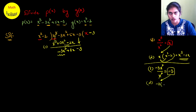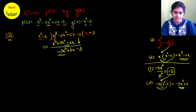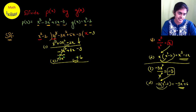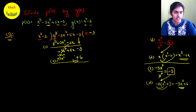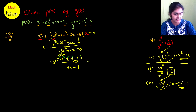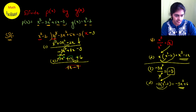Now step two again: multiply -3 by the divisor x² - 2. That gives -3x² and (-3)×(-2) = +6. Write this as -3x² + 6 below the new dividend. There is no x term here. Now subtract: -3x² and -3x² cancel, 7x comes down as is, and -3 - 6 = -9.